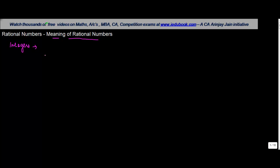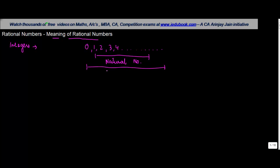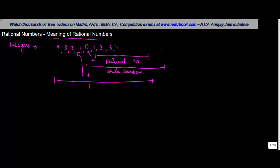Integers are all your counting numbers: 1, 2, 3, 4, and so on. That set is also known as natural numbers. Then as you add 0, the natural numbers plus 0 become whole numbers. And when you add negative natural numbers to the set of whole numbers, this gives you the broader set of integers.